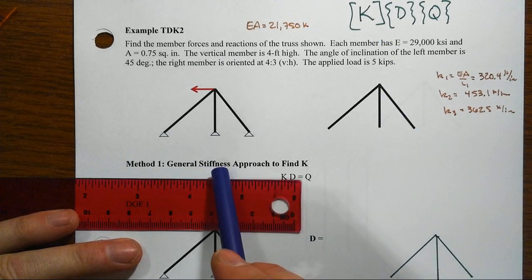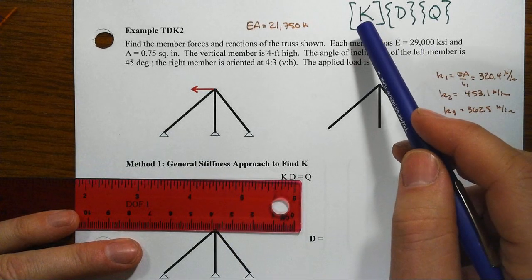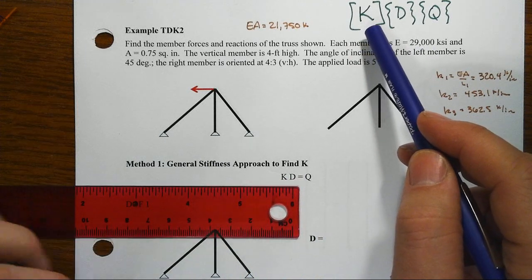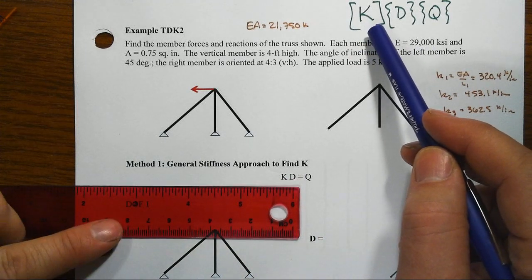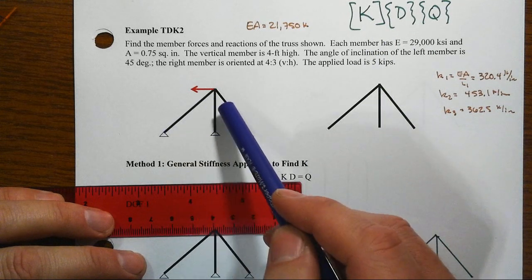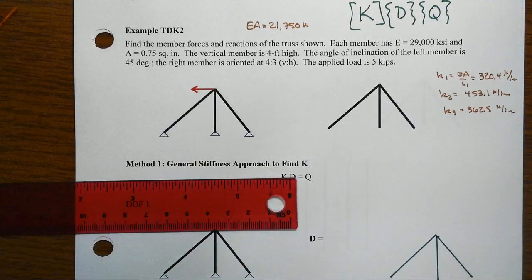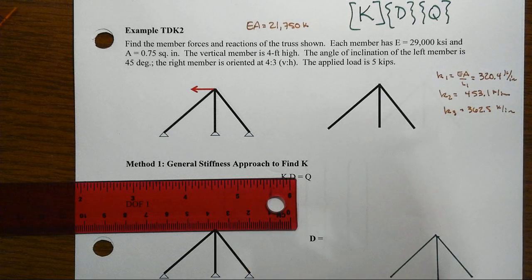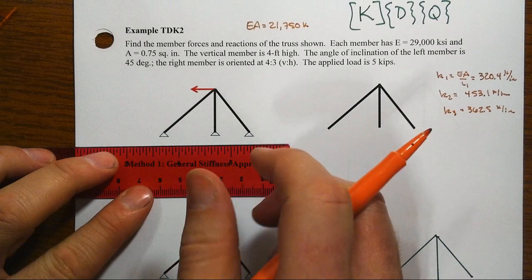One of them is going to be the general stiffness method, and then we'll come back with a second series and talk about the direct stiffness approach. That direct stiffness approach is going to require us to have to deal with inclined members, and members, in other words, that are not aligned with the global coordinate system. So let's get all of that from a big picture established.